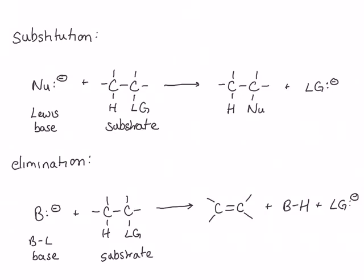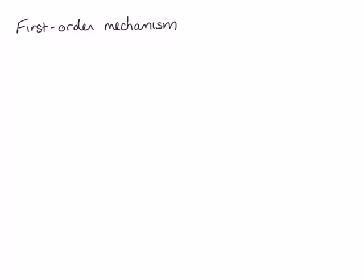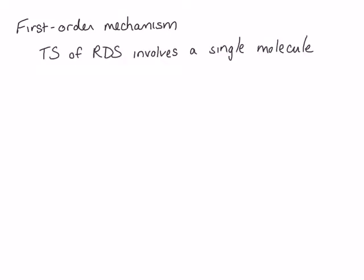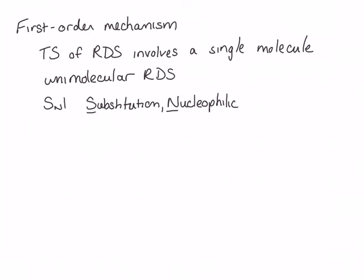Each of these reactions can proceed through two different mechanisms: a second-order or a first-order mechanism. In a first-order mechanism, the transition state of the rate-determining step involves only a single molecule — in other words, a unimolecular rate-determining step. A first-order or unimolecular nucleophilic substitution reaction is called an SN1 reaction, which stands for substitution, nucleophilic, unimolecular. A first-order elimination mechanism is called an E1 mechanism, standing for elimination, unimolecular.